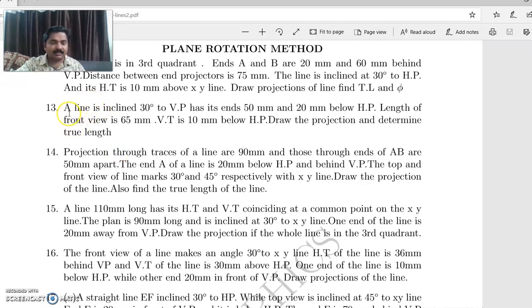Question number 13. A line is inclined 30 degrees to VP as it ends 50mm and 20mm below HP. Length of front view is 65mm. Vertical trace is 10mm below HP. Draw the projection and determine the true length.